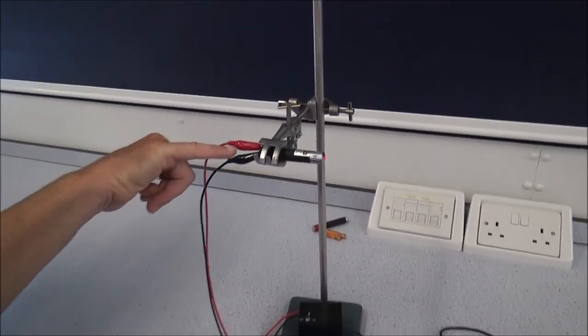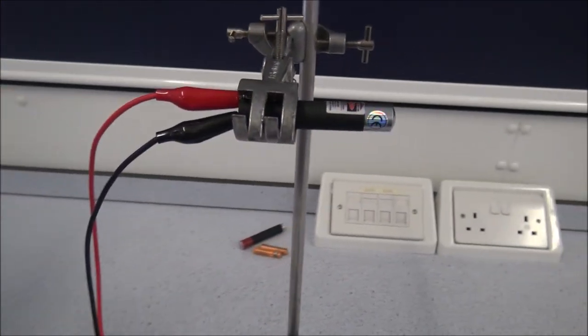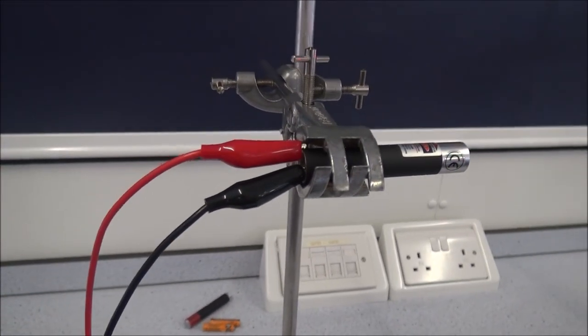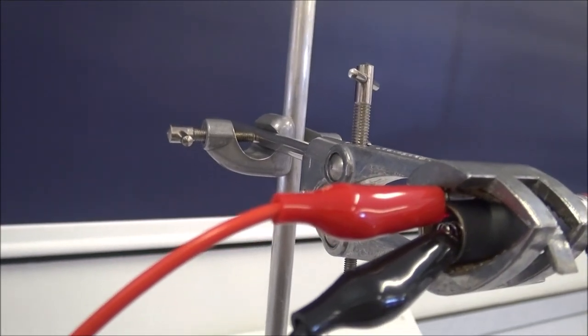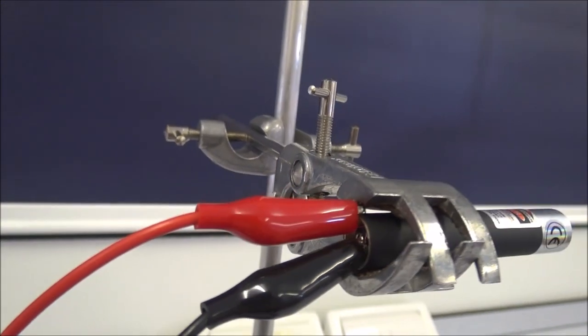And then at this end, where the batteries would normally connect, we've got one crocodile clip going to the spring on the batteries, and the other crocodile clip connected to the case, which is being used as the positive connection in this case.